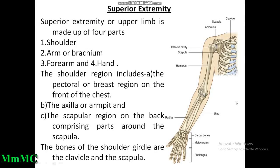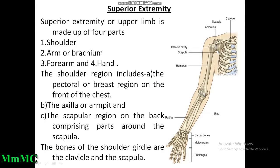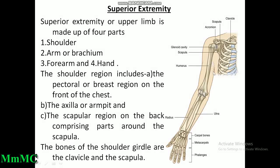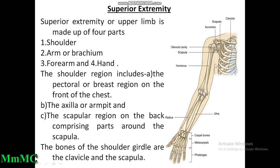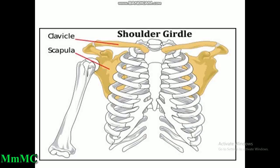The superior extremity or upper limb is made up of four parts: shoulder, arm or brachium, forearm, and hand. The shoulder region includes the pectoral or breast region on the front of the chest, the axilla or armpit, and the scapular region on the back comprising parts around the scapula. The bones of the shoulder girdle are the clavicle and the scapula.